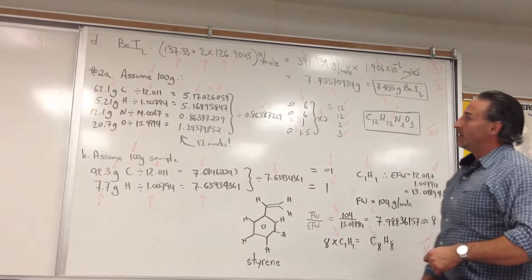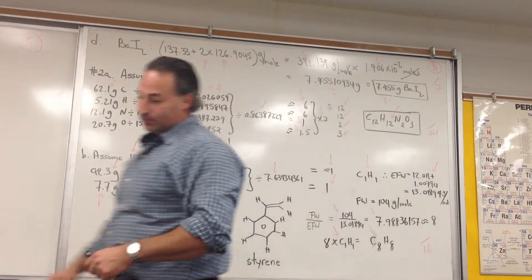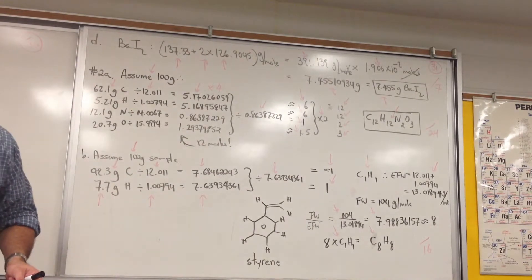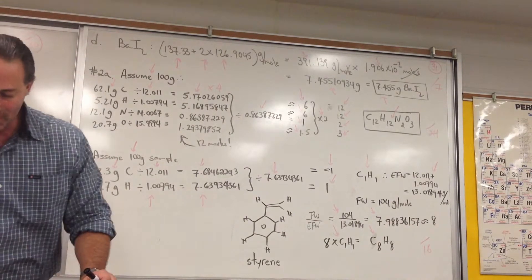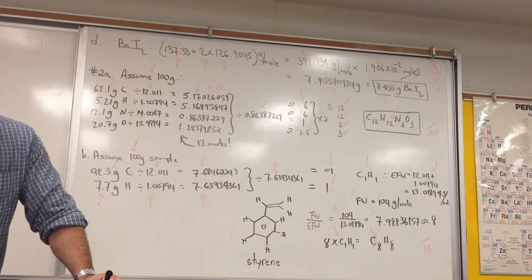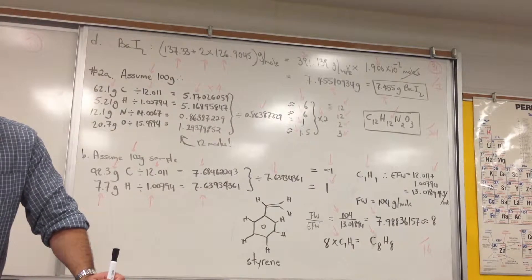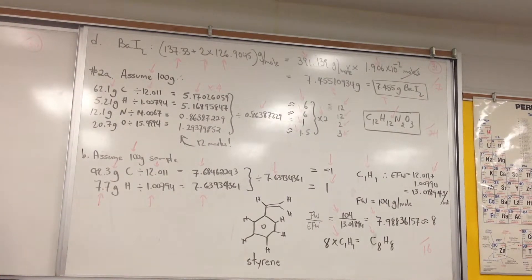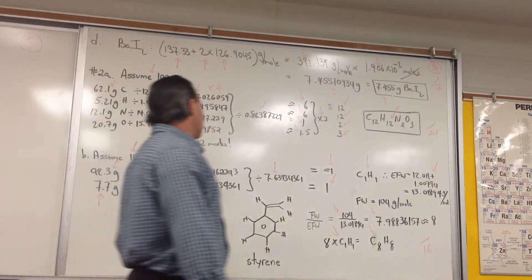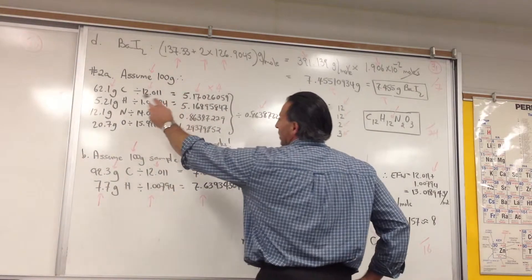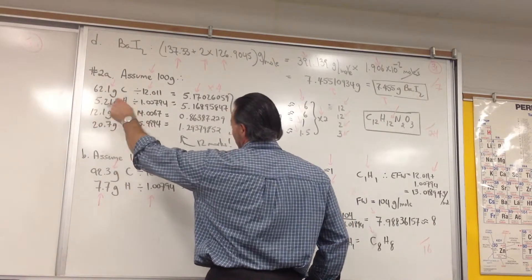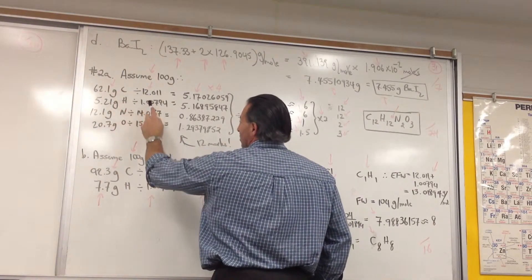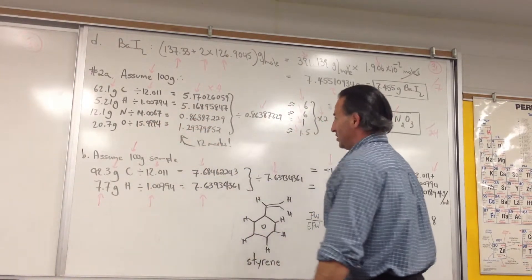The second question asks you to determine the empirical formula of a substance with 62.1% carbon, 5.21% hydrogen, 12.1% nitrogen, and 20.7% oxygen. So, the first step is to assume that we have 100 grams of the substance. And that converts all percentages into gram amounts. 62.1 grams of carbon, etc. Divide by the molar mass of each substance. And it gives you these molar ratios.